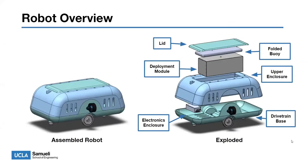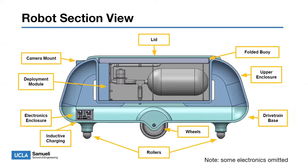Hi, my name is Zoe and I'm going to be giving a high level design overview for our robot. Here we have an assembled view of the robot and an exploded view. In the exploded view, we can see the six major components: the lid, the folded buoy, the deployment module, the upper enclosure, the electronics enclosure, and the drivetrain base. In this section view, we can see how everything fits together. The drivetrain uses differential drive and rolls on idler wheels and rollers. We also have inductive charging on the flat base and a camera mounted to the top.